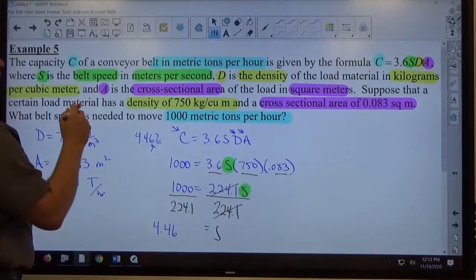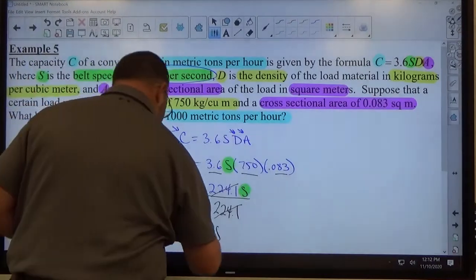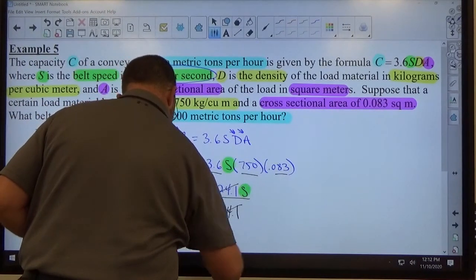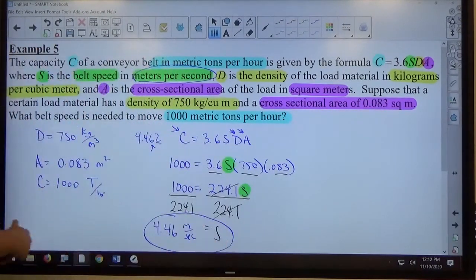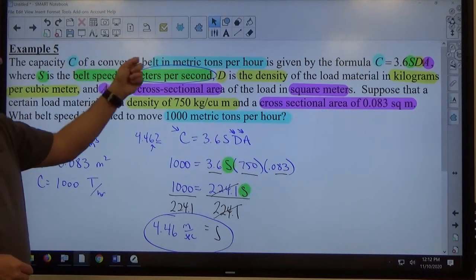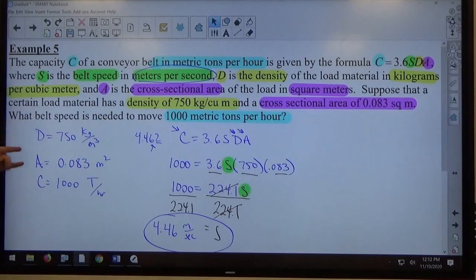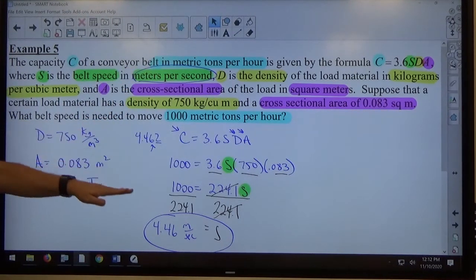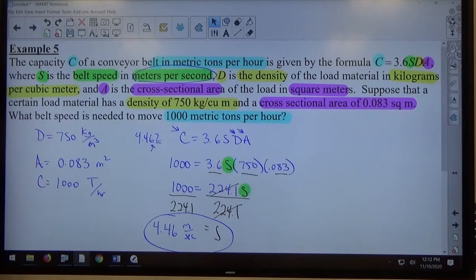And the unit of belt speed is meters per second. So I'm going to put meters per second. On the word problems, I'm expecting you to find the correct unit of the answer. Again, if a formula is given and every unit is given to you in the right form, then the answer will come out in the right form for that unit. So in fact, we're trying to find S. S is supposed to be meters per second. The other three things they told me were in the proper unit for those things. It tells me this should come out to the proper unit for that variable. So 4.46 meters per second would be the speed of the belt under the circumstances of what they gave us.